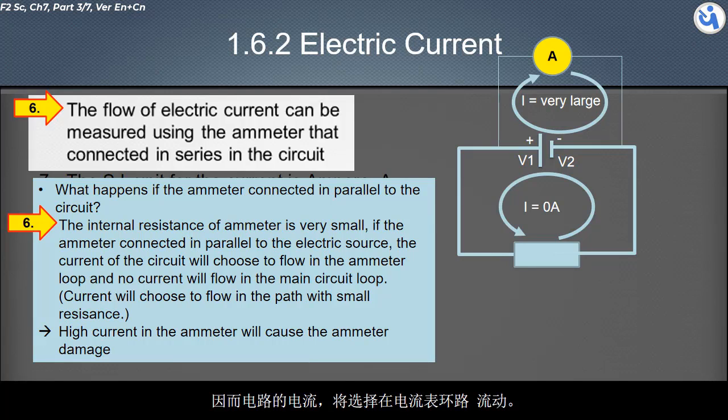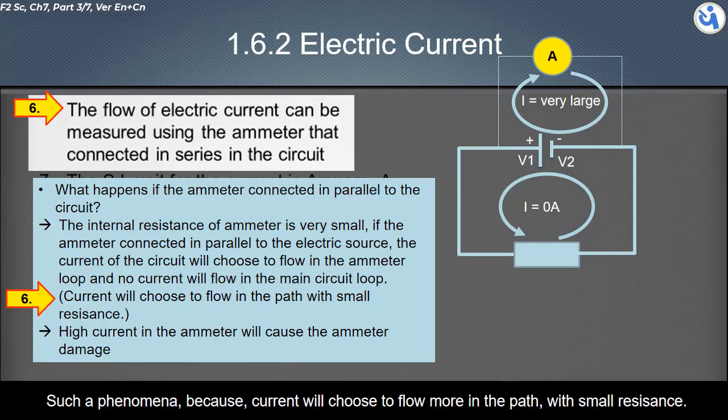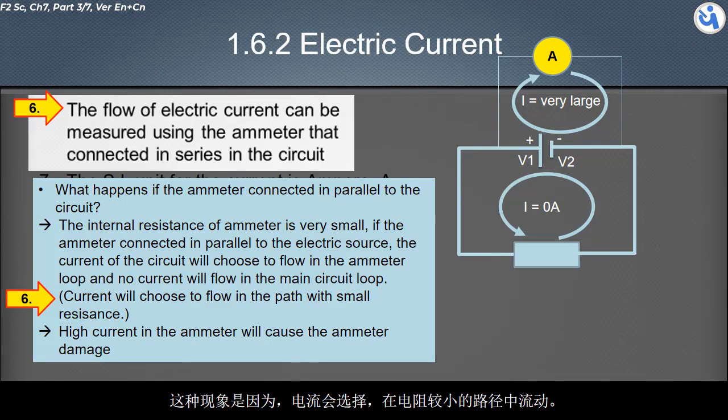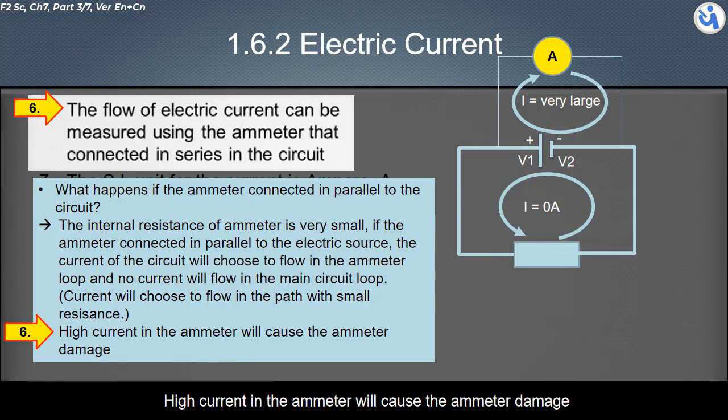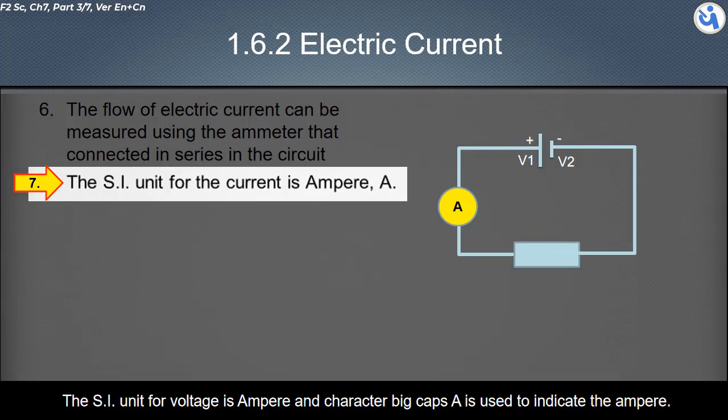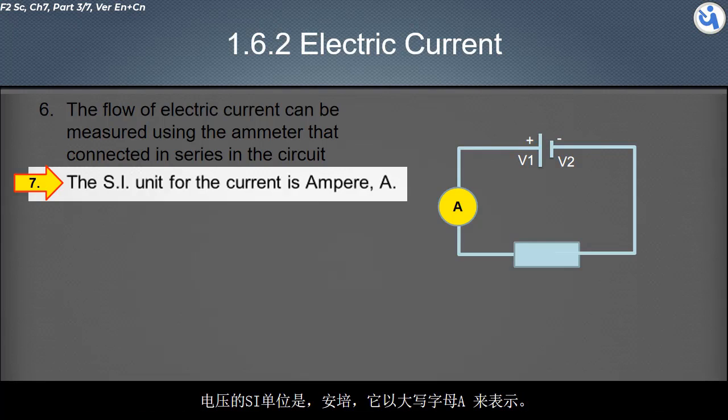Such a phenomenon occurs because current will choose to flow more in the path with smaller resistance. The large current in ammeter will cause the ammeter to be damaged. The SI unit for current is ampere, and character big caps A is used to indicate the ampere.